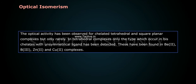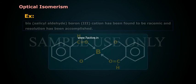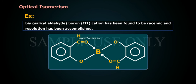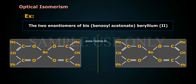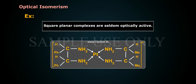These have been found in Be²⁺, B³⁺, Zn²⁺, and Cu²⁺ complexes. Example: bis(salicylaldehyde)boron(III) cation has been found to be racemic and resolution has been accomplished. The two enantiomers of bis(benzoylacetonato)beryllium(II) have also been studied. Square planar complexes are seldom optically active.